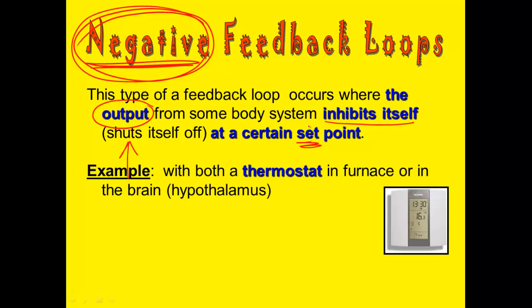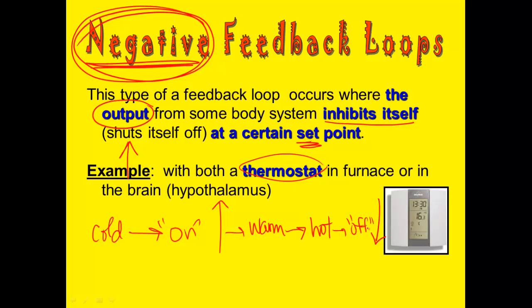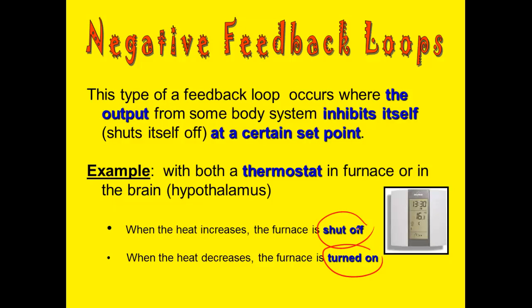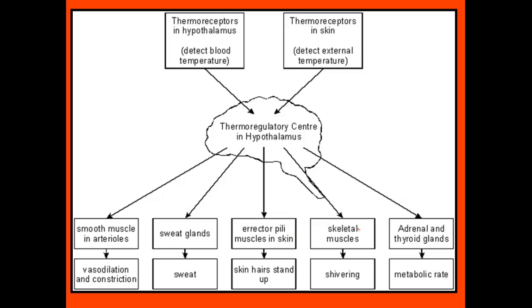The best example of that is a thermostat in your house. When your house is cold, the thermostat will turn the furnace on. The furnace turns on and it gets hot. When it reaches a certain temperature, the thermostat will turn the furnace off at a set point. Then it will cool down again and the furnace will turn on again. So when the heat increases and gets hot, the furnace shuts off; when the heat decreases and gets cold, the furnace is turned on. Something very similar happens in the body with the negative feedback system.